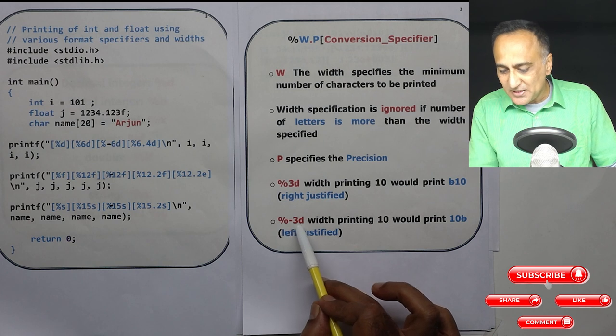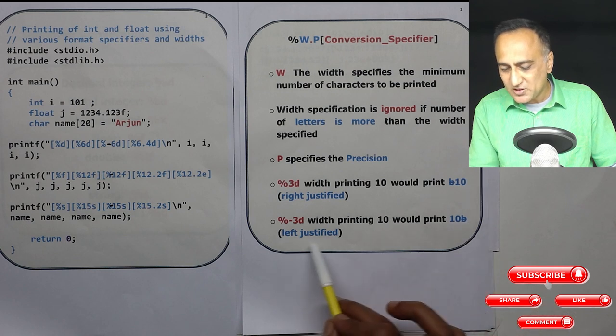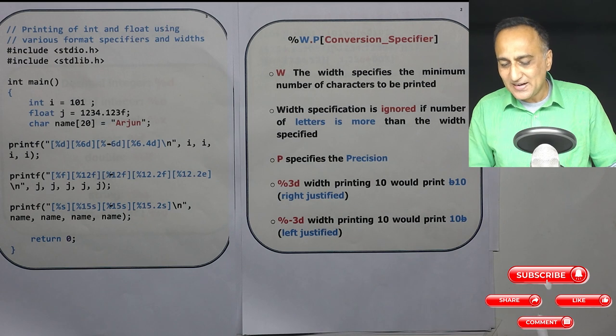If I make it %-3d, 10 would be printed first and the blank would come after the last zero. This is called left justified. The blank before the number is called right justified.